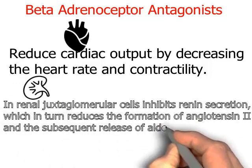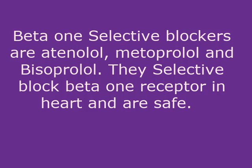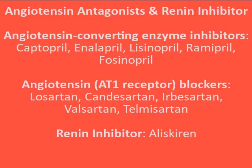Blockade of beta-1 receptors in renal juxtaglomerular cells inhibits renin secretion, which in turn reduces the formation of angiotensin 2 and the subsequent release of aldosterone. Beta blockers are classified as non-selective — nadolol, propranolol, and timolol — which block both beta-1 and beta-2 and may cause bronchoconstriction, making them unsafe for asthmatic patients. Beta-1 selective blockers include atenolol, metoprolol, and bisoprolol. Drugs like carvedilol and labetalol block both alpha and beta receptors and are very effective antihypertensive agents.